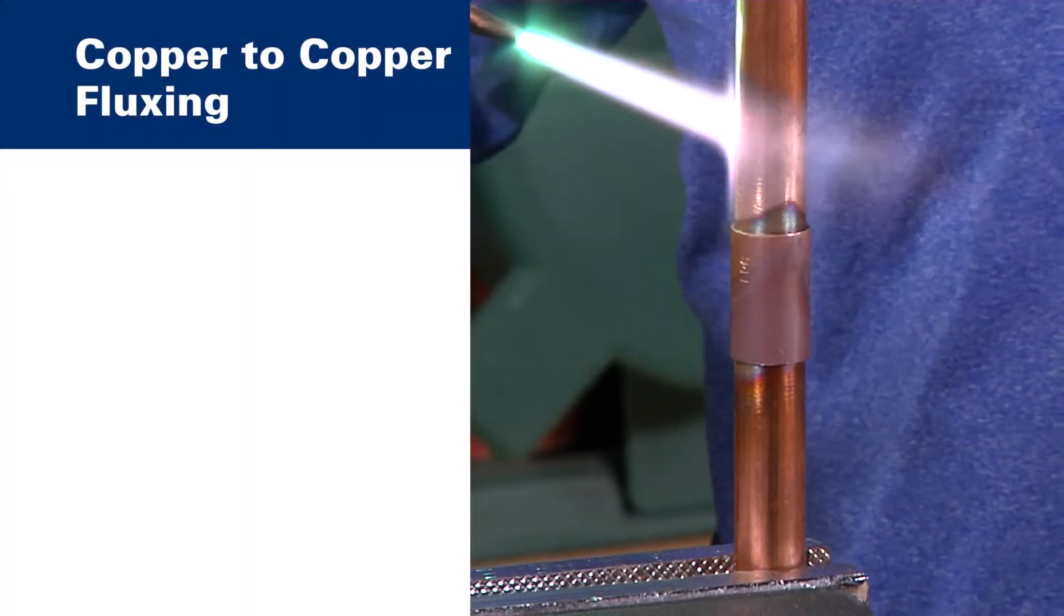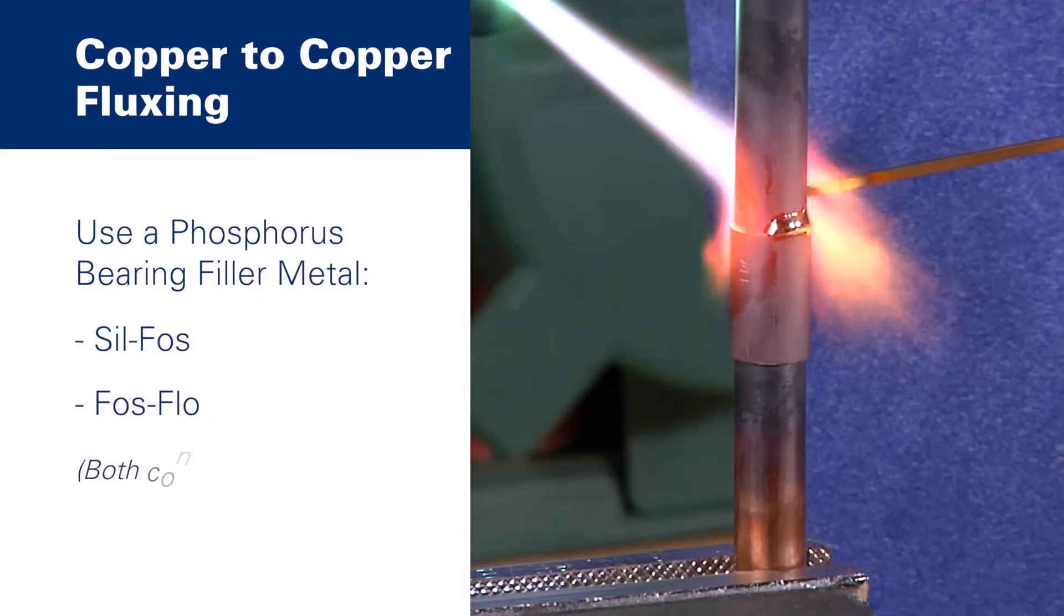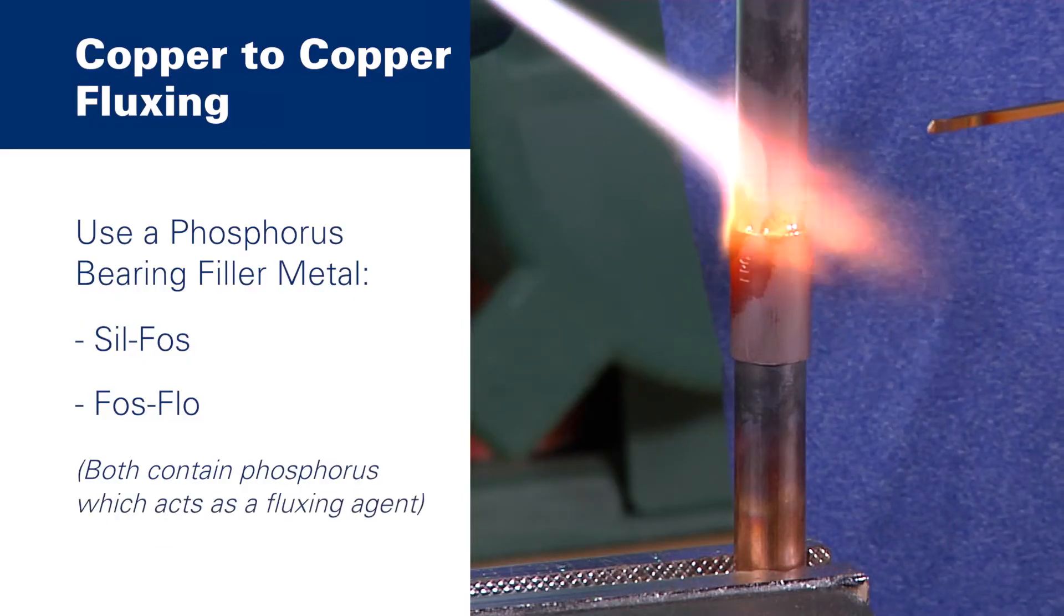When braising copper to copper, you can use a phosphorus-bearing filler metal like Silphos or Phosphlo, because they contain phosphorus which acts as a fluxing agent.